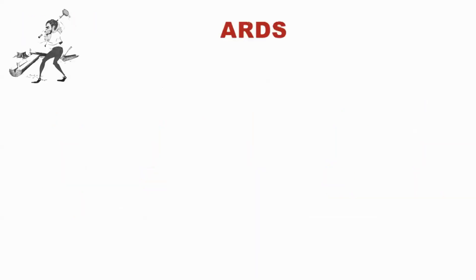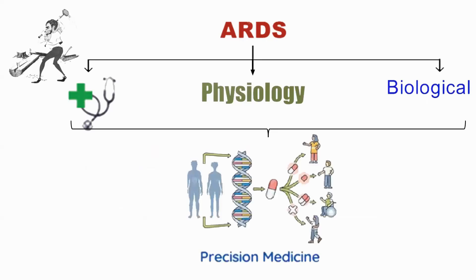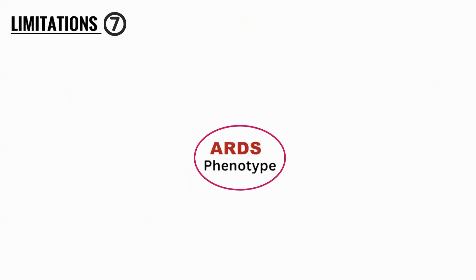When you look at ARDS broadly, it has been divided into clinical, physiological, and biological bases — all with the intent that precise therapeutic options can be derived to target effectively and influence good outcomes. When we talk about phenotyping, that is splitting. We phenotype to understand the various spectrum of ARDS because it is a hugely heterogeneous disease. But there are seven limitations of phenotyping.